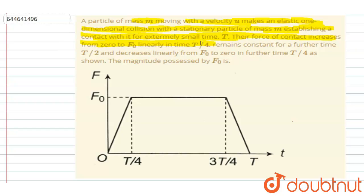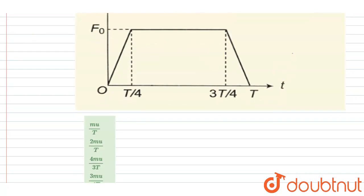In t by 4 time, remains constant for further t by 2 time, then decreases linearly from f0 to 0 in further t by 4 as shown. Magnitude possessed by f0 is? So if you see, both the balls are of same mass.